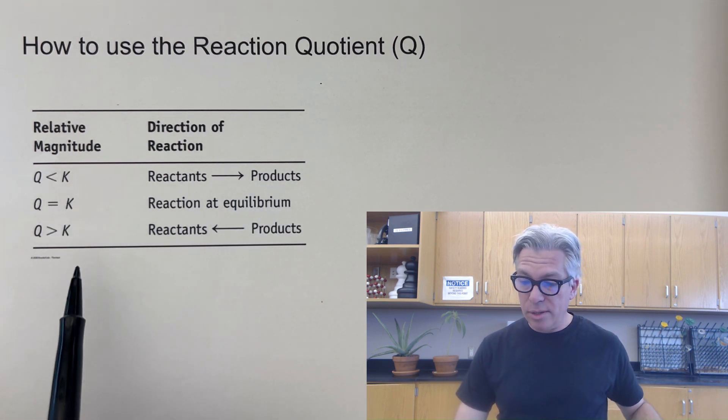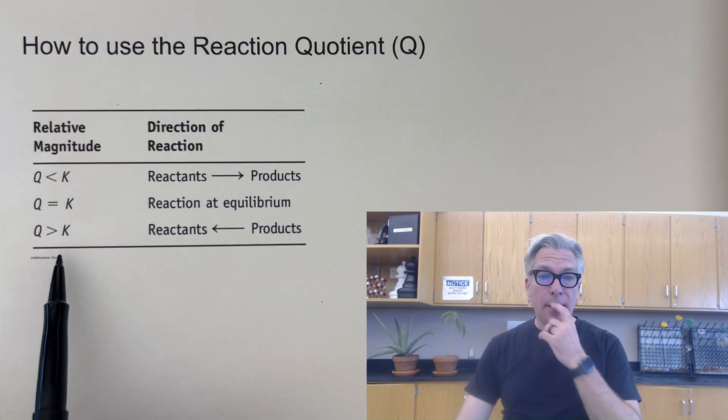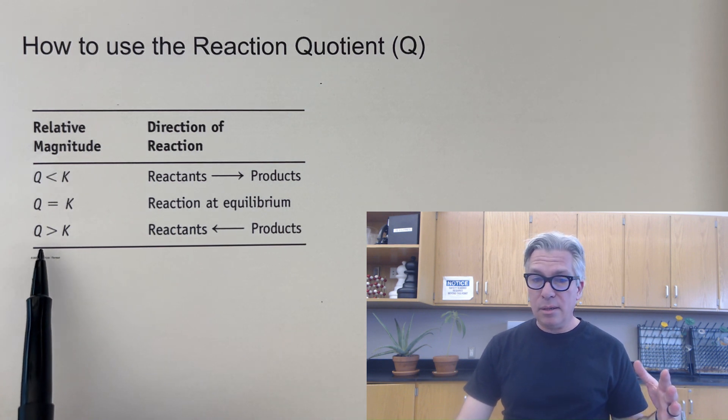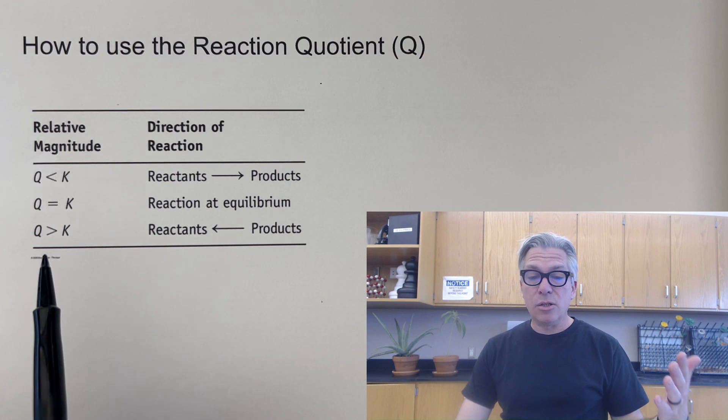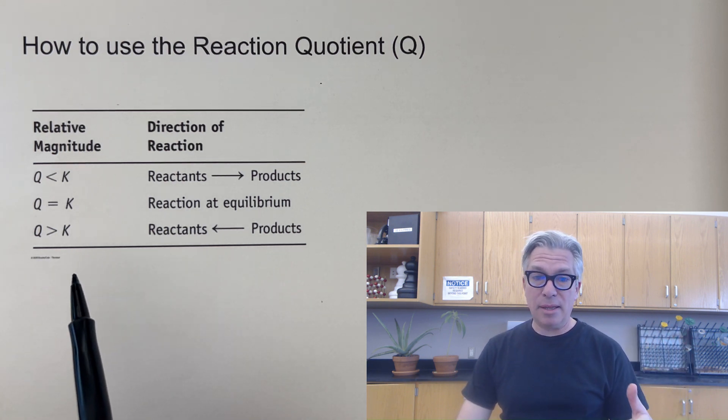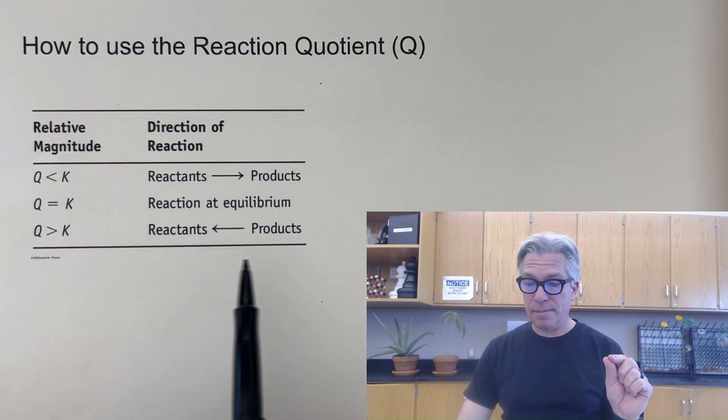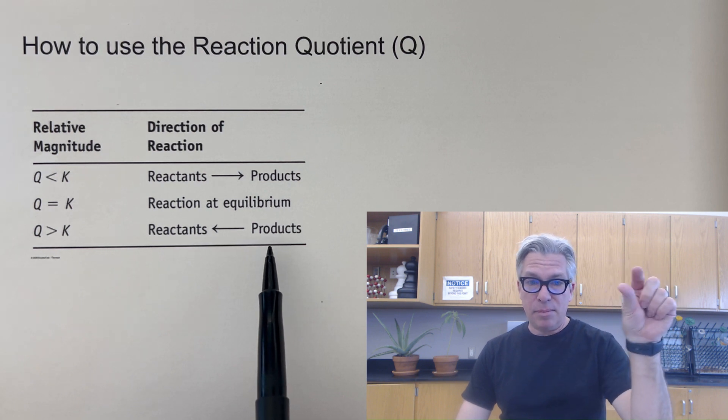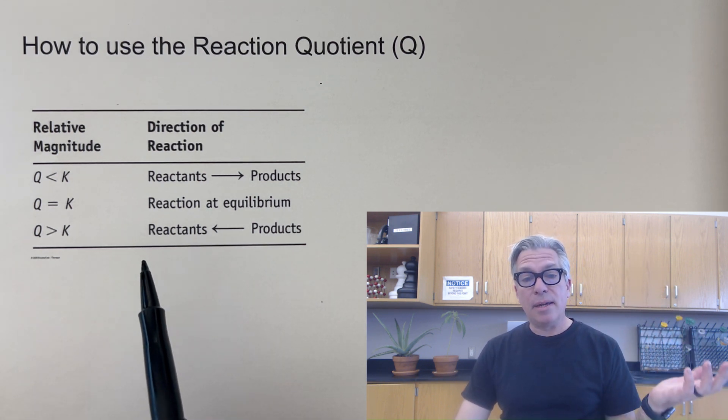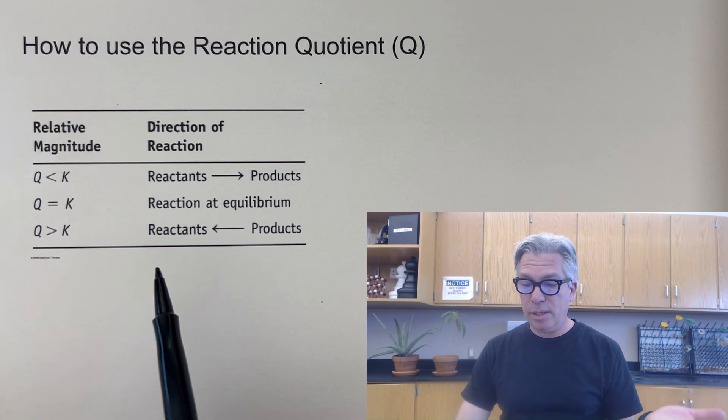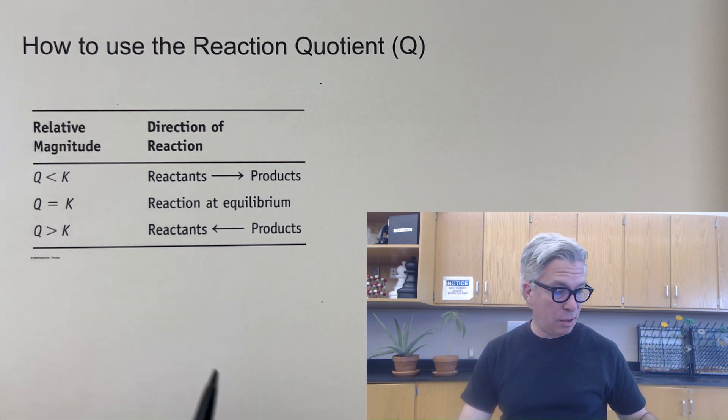In my case, Q was greater than K. And in that case, the ratio is too big. The ratio of the products over the reactants is too big. So it has to drop to get to equilibrium. And that means getting rid of some of the products, making that top number smaller, and making some more reactants, making the bottom number bigger. And we will hopefully get to the equilibrium that way. So this is the summary of how we use it.